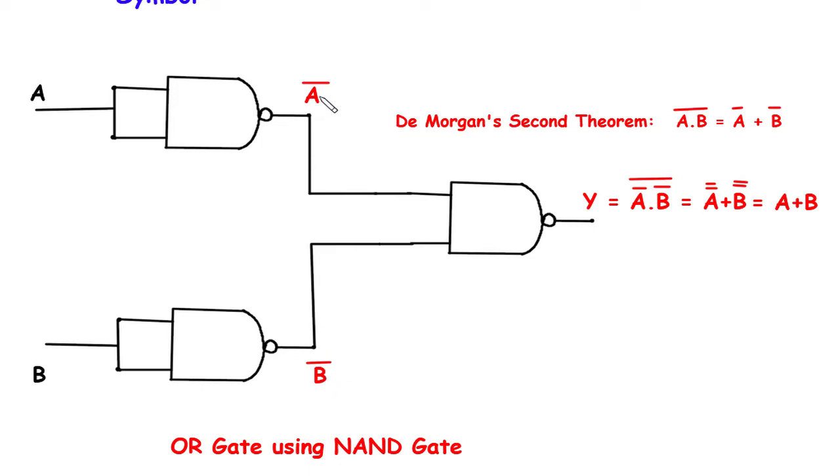Now a bar and b bar are the inputs for this NAND gate. Its output will be y equals a bar into b bar, whole bar. According to De Morgan's second theorem, a dot b whole bar equals a bar plus b bar.